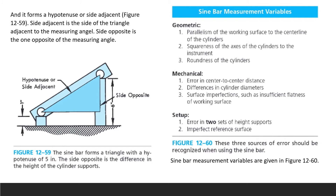Geometric errors include the parallelism of working surface to the center line of cylinders, squareness of the cylinder axis to the instrument, and roundness of the cylinders. Mechanical errors are the center-to-center distance differences, differences in cylinder diameters, and surface imperfections like insufficient flatness of the working surface. Setup errors include errors in the sets of height supports and an imperfect reference surface.